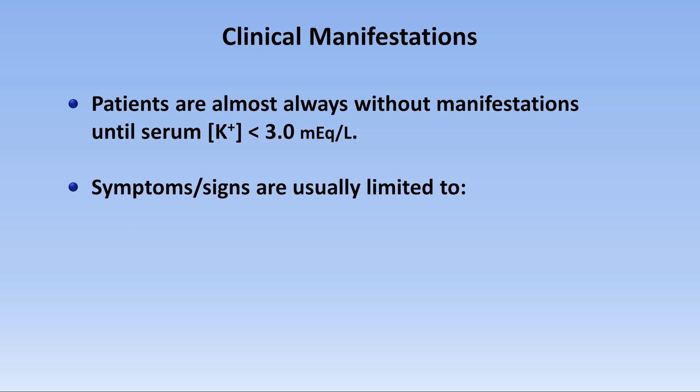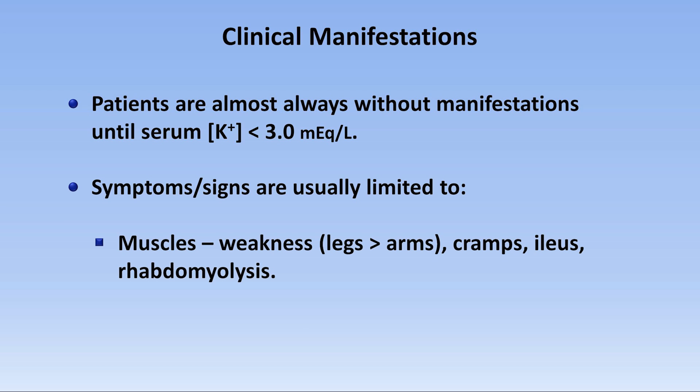Signs and symptoms are usually limited to two organ systems. First, in the muscles, patients can develop weakness, which begins in the legs and then spreads to the arms as the hypokalemia gets more severe. Muscle cramps and an ileus can occur. Rarely, patients can develop rhabdomyolysis — that is, widespread breakdown and lysis of myocytes. The release of intracellular potassium during cell lysis can unfortunately mask the hypokalemia that initially triggered the rhabdo, making an accurate diagnosis particularly challenging.